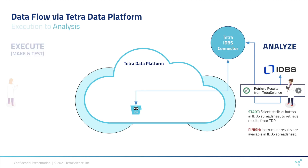The second phase of the data flow is initiated by the scientist back in the IDBS eWorkbook spreadsheet. They click on a button in the spreadsheet to initiate a data transfer process from the Tetra data platform into the IDBS eWorkbook spreadsheet. The Tetra IDBS connector retrieves the harmonized IDS files and pushes the results directly into the IDBS eWorkbook spreadsheet for the scientist to review and analyze. Let's jump over to a live demonstration of what I've just been talking about.